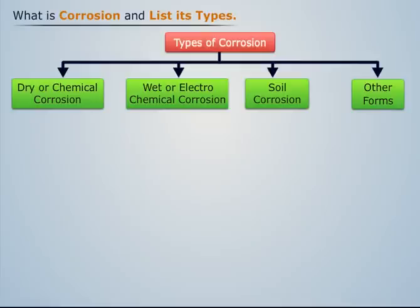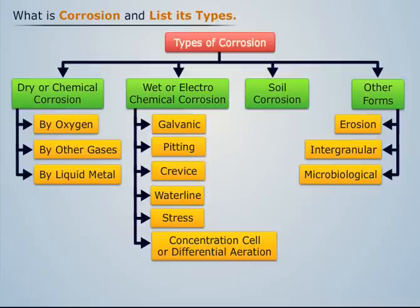Dry corrosion, wet corrosion, and other forms of corrosion can be further classified into subcategories. Note that corrosion as a process is exactly the reverse of the extraction of metals.